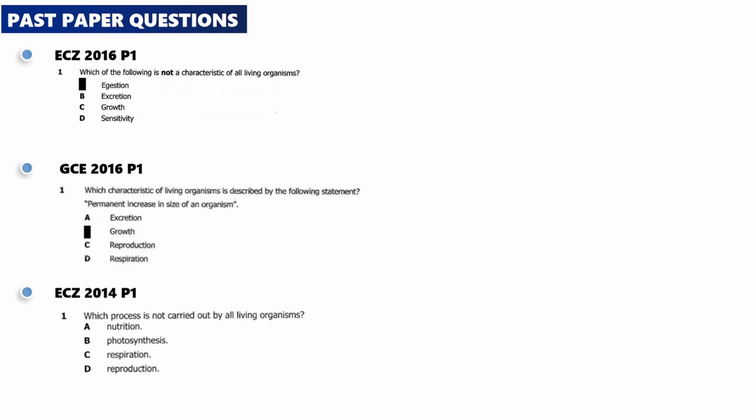The correct answer is B — photosynthesis, because it is only carried out by plants. That concludes this topic. Make sure you memorize the characteristics of living organisms using the MR GRAPHIC abbreviation that you have learned.